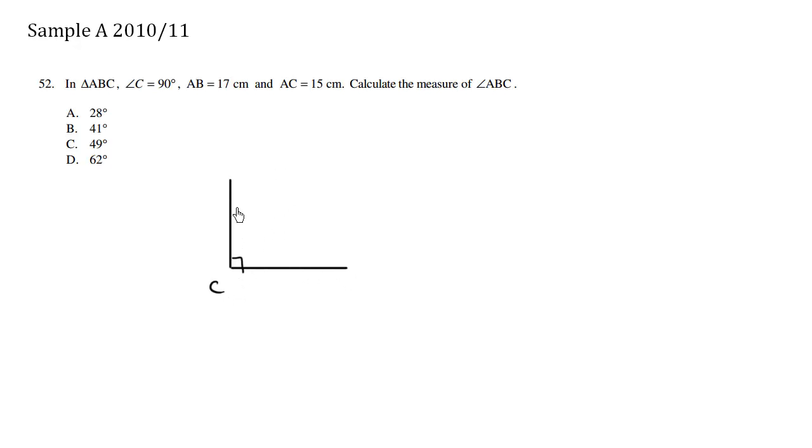Here's my C, and AC is 15, AB is 17. So I'm just going to make this my point A. So AC is 15 centimeters, and my AB is 17 centimeters.